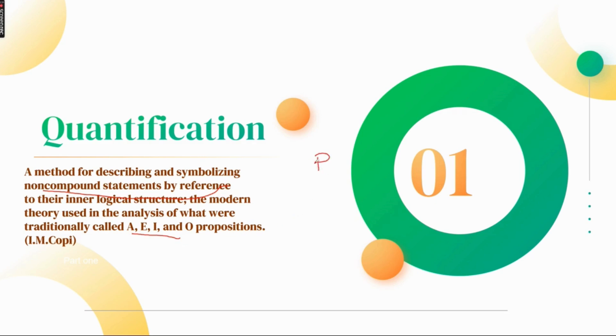So this should be clear: the categorical propositions are of four types — A proposition, E proposition, I proposition, and O proposition.